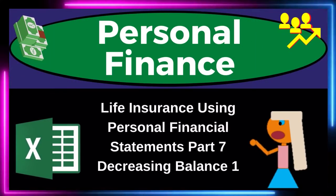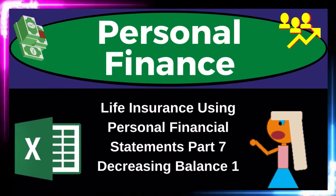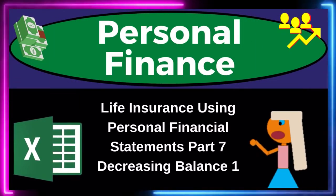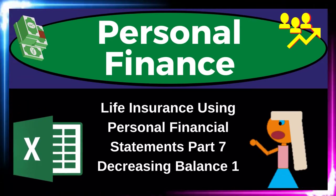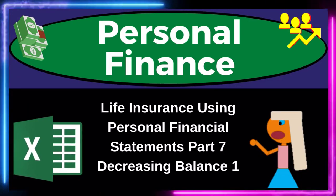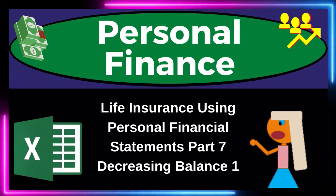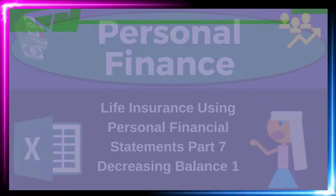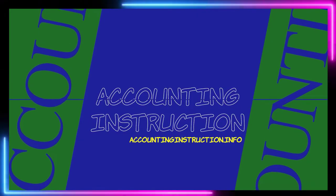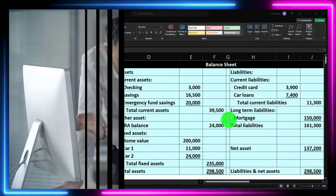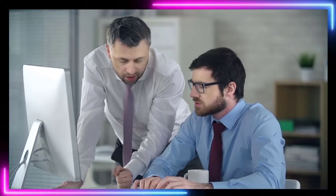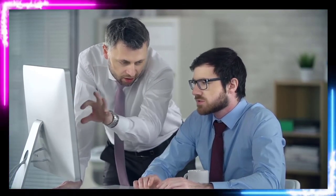Personal finance practice problem using Excel. Life insurance using personal financial statements, part number seven. Decreasing balance method, number one. Prepare to get financially fit by practicing personal finance. Here we are in our Excel worksheet. If you don't have access to it, that's okay because we've basically been building this from a blank sheet in prior presentations.